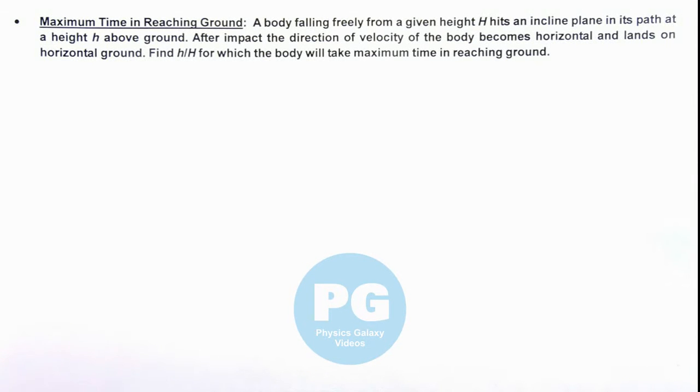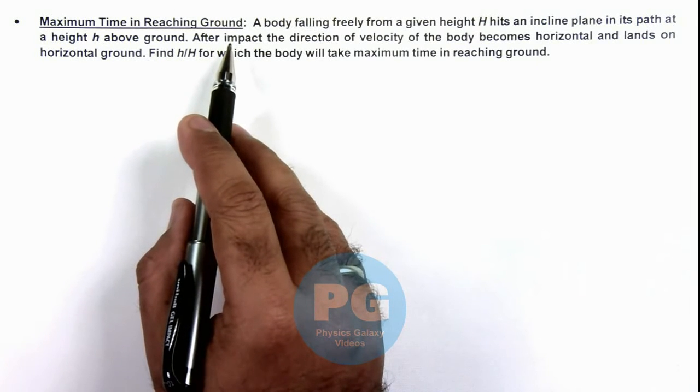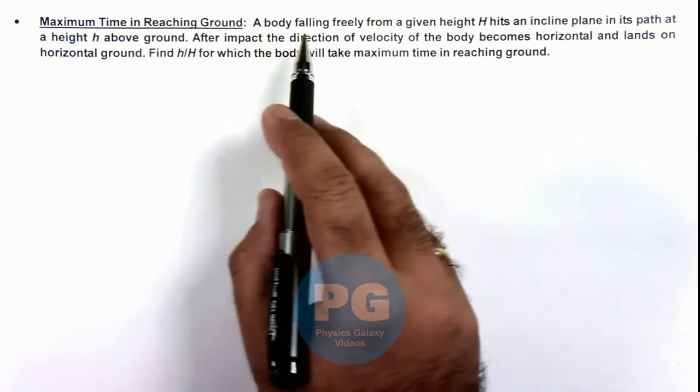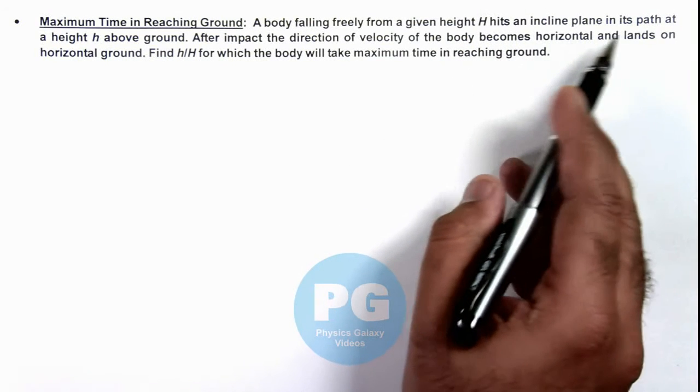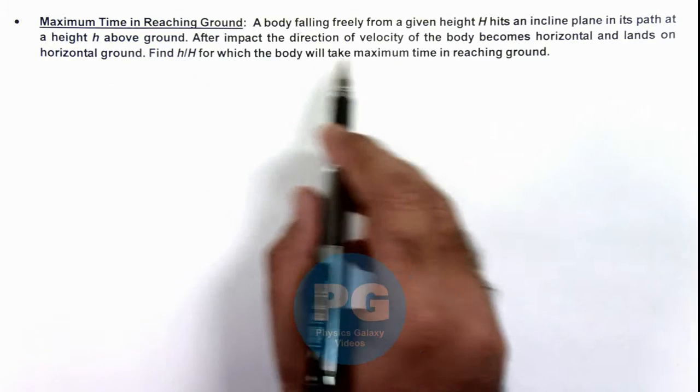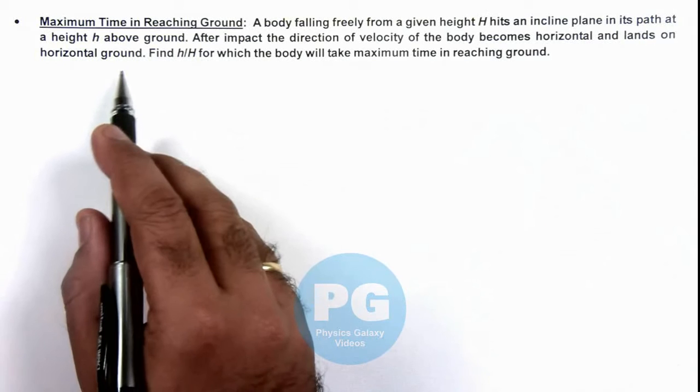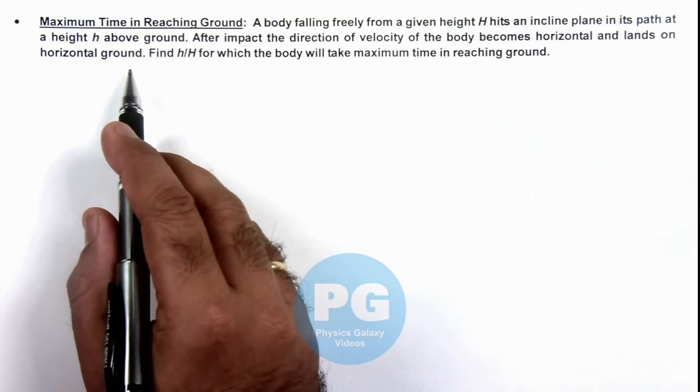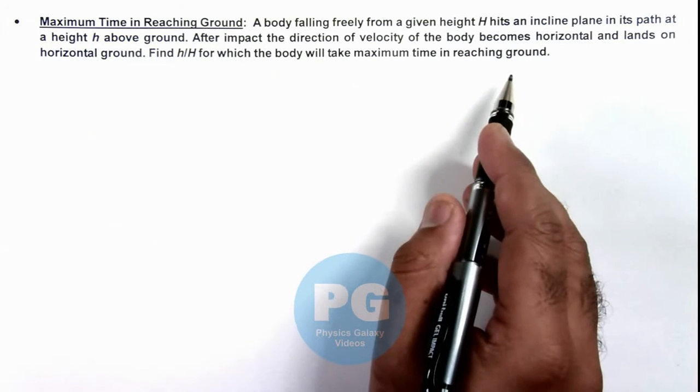In this illustration we'll find the maximum time in reaching ground by a projectile. We are given that a body falling freely from a given height H hits an incline plane in its path at a height small h above ground. After impact, the direction of velocity becomes horizontal and lands on horizontal ground. We are required to find h by H for which the body will take maximum time in reaching ground.